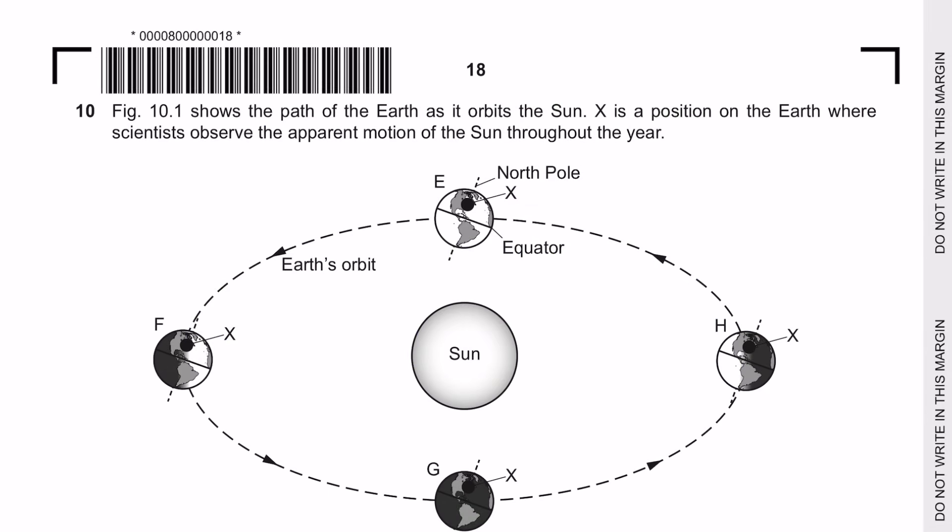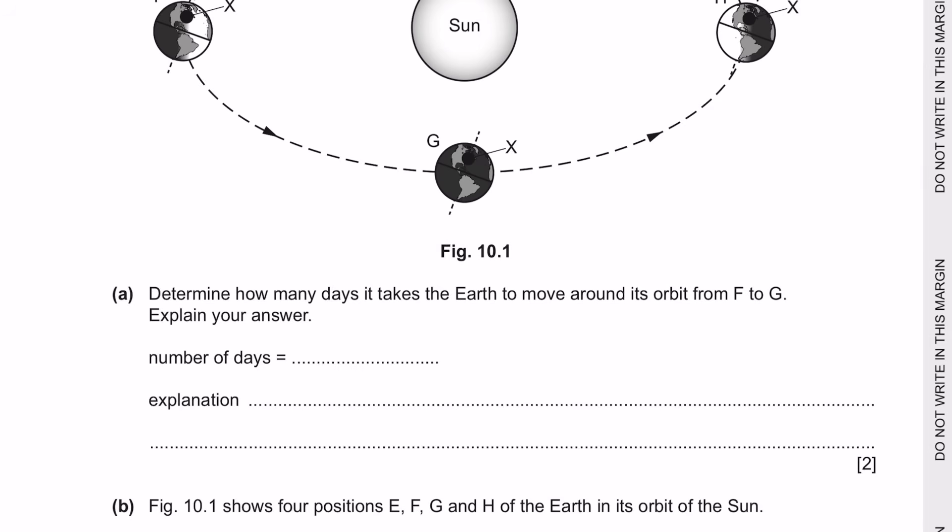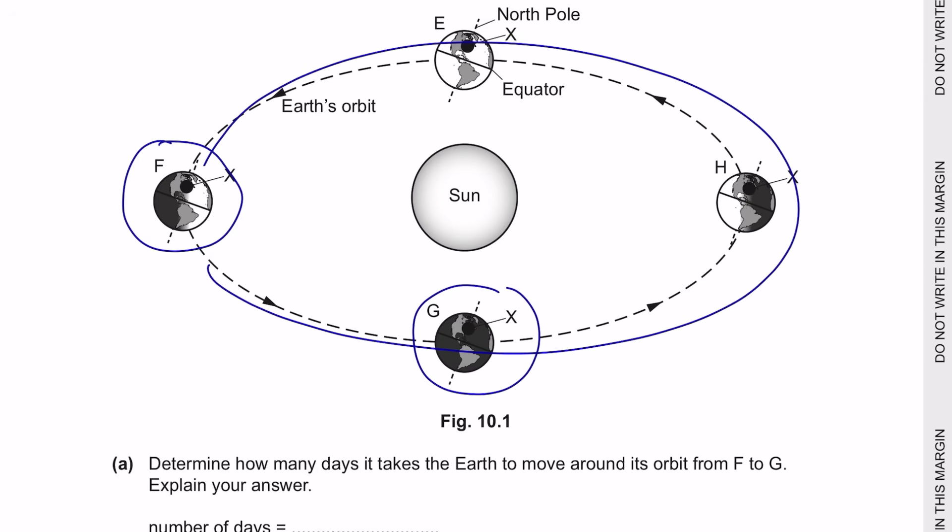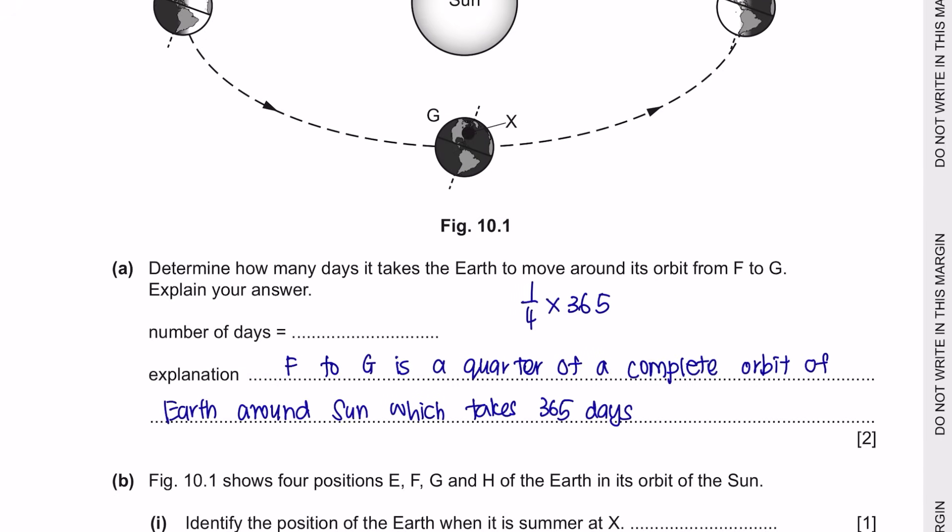And the last question 10. Figure 10.1 shows the path of the earth as it orbits the sun. X is a position on the earth where scientists observe the apparent motion of the sun throughout the year. Determine how many days it takes the earth to move around its orbit from F over here to G. A full complete circle is going to take 365 days. And as you can see, from this position, from F to G, it's a quarter of a circle. So the number of days would just be a quarter times 365 days, which is 91.25, so I will just write it as 92 days.